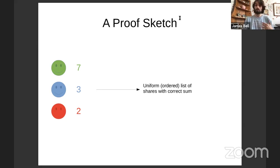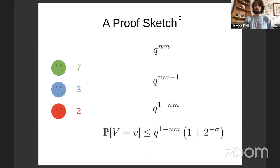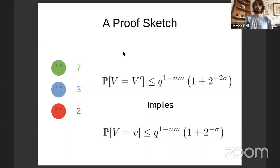We want to show that if you have two databases that add up to the same amount, the adversary's view on one is almost indistinguishable from their view on the other. We show that the resulting set of shares the adversary receives is basically uniformly selected from the possible ordered lists of shares with the correct sum. There are q to the nm possible lists; one in q of them will have the correct sum. The probability of being any one of those values should be q to the 1 minus nm, and we show it's at most that times 1 plus 2 to the minus sigma.